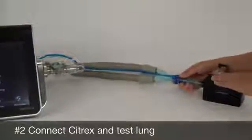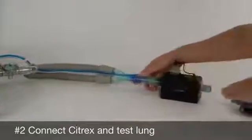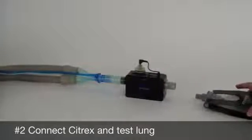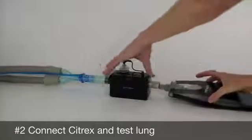First, connect the patient circuit to the medical ventilator at one end and the Citra-X device with the test lung at the other end.